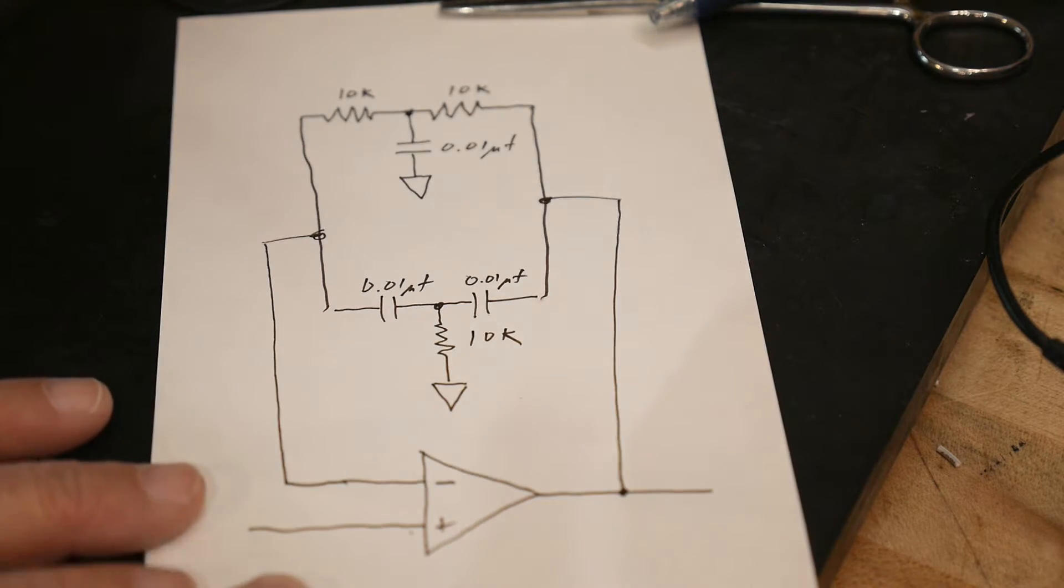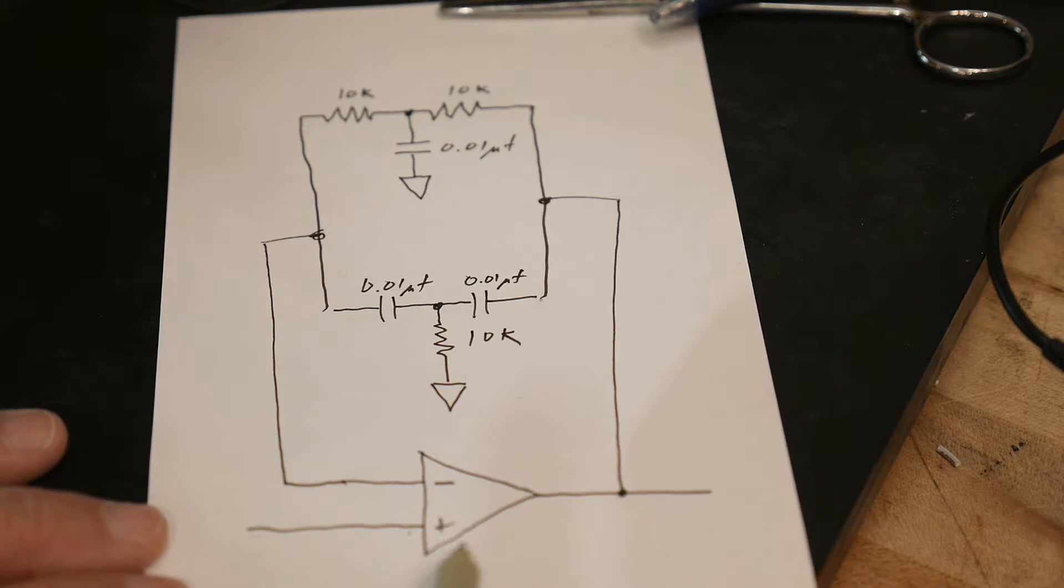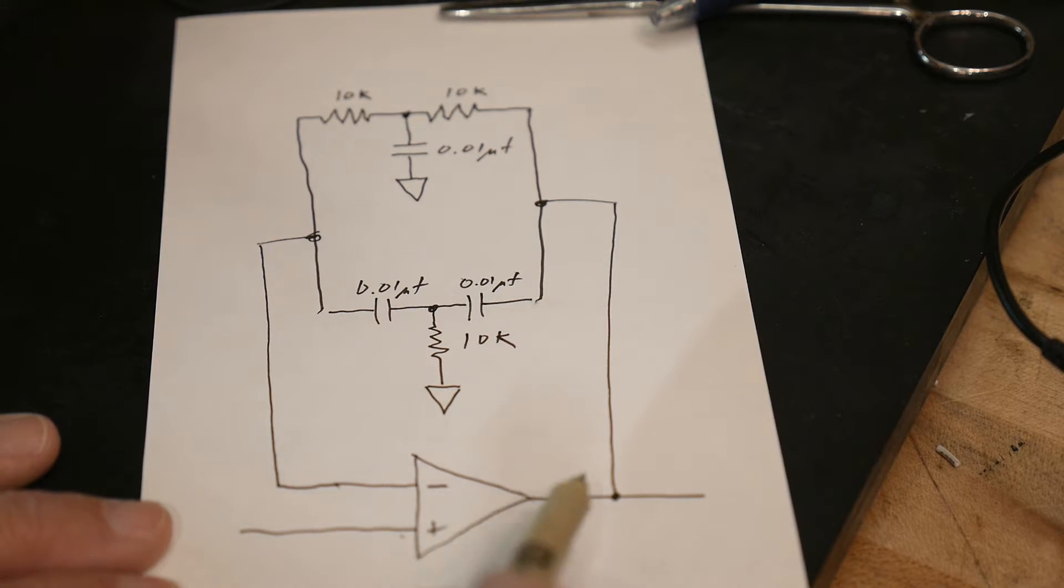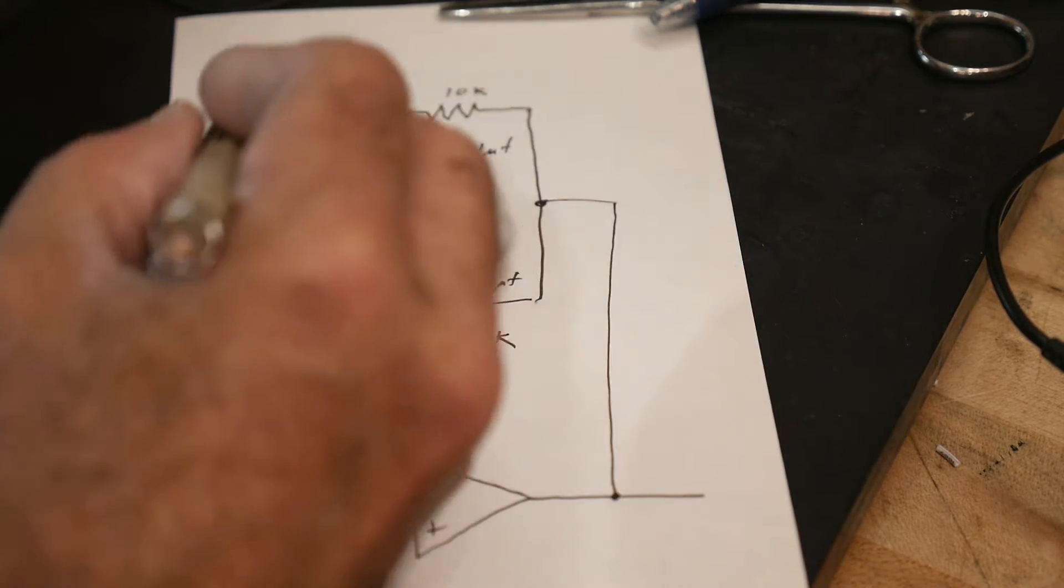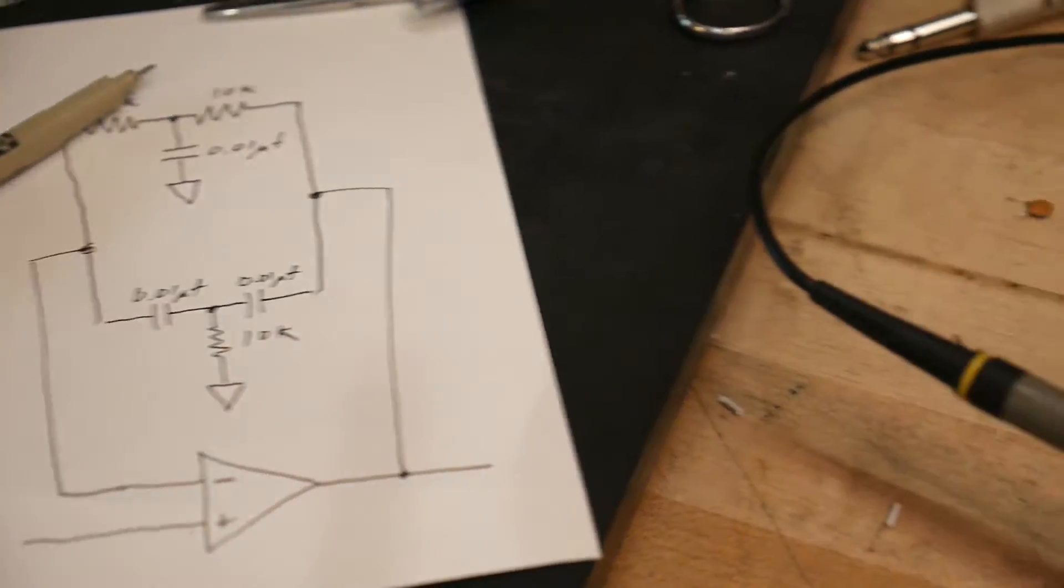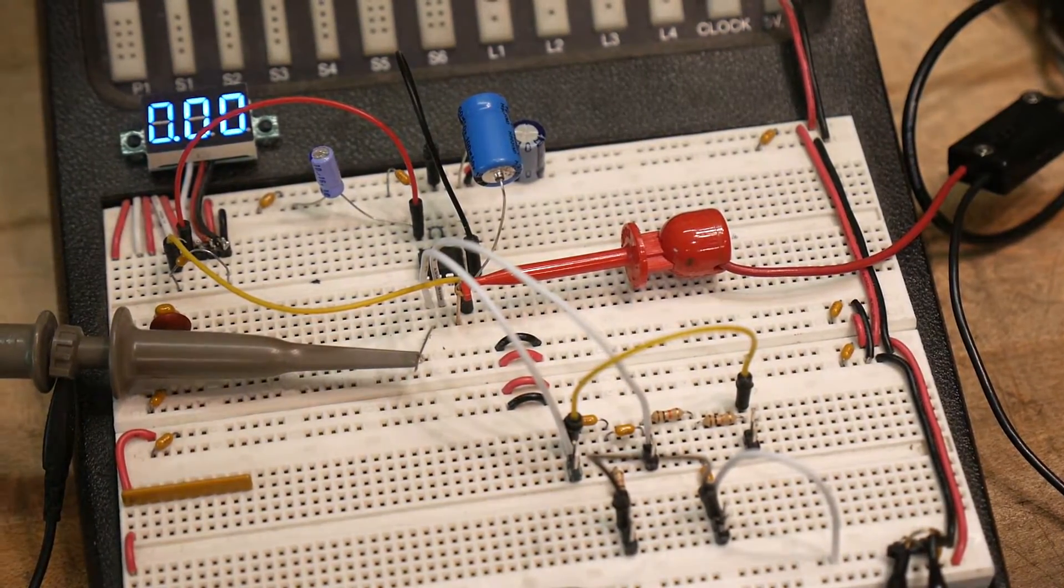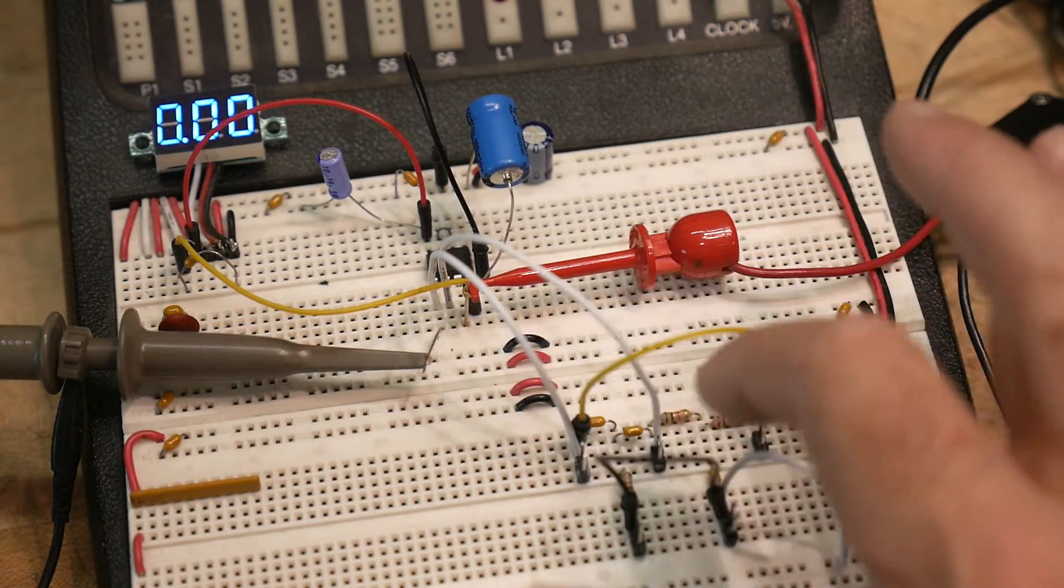But what if we put that in the feedback path of an op-amp? This is just a follower circuit for an op-amp, a unity gain. We're going to put this circuit in the feedback path. That's what I've done here. If you've watched my last video, this is the exact same circuit that I had before.